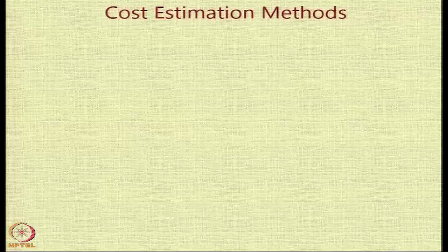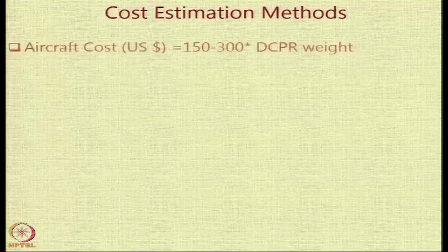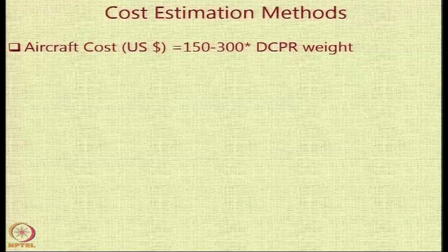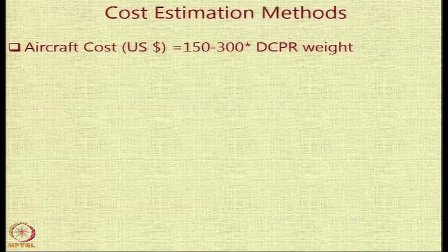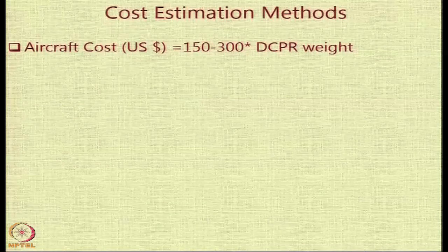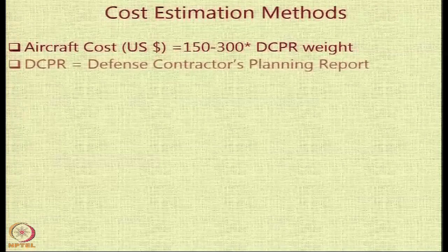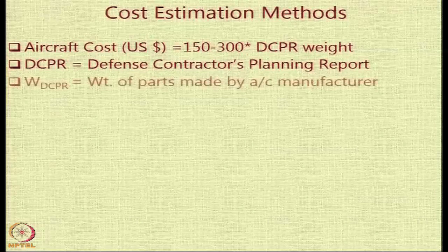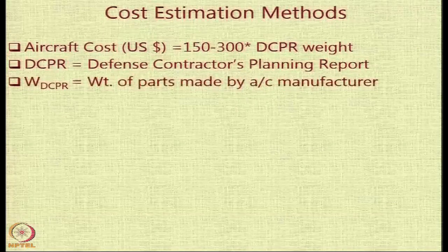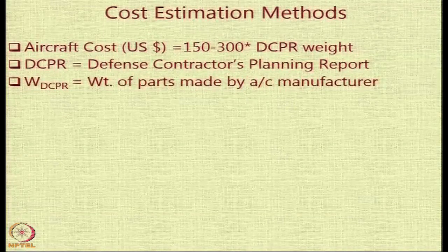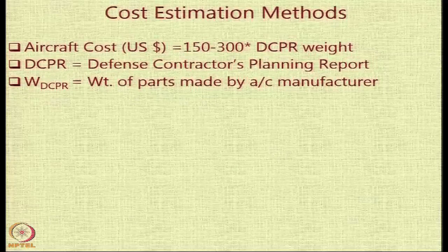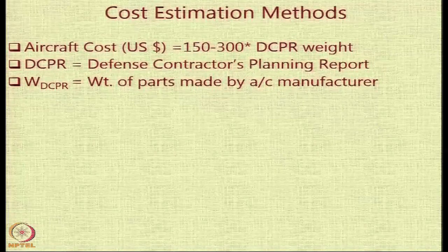The cost estimation methods for the RDT&E phase exist at various levels. One simple way is to assume a cost per kilogram of the aircraft using something called the defense contractors planning report, or DCPR weight. This weight basically consists only of the parts manufactured by the aircraft manufacturing company; all other parts which are outsourced or procured from other vendors are not included.